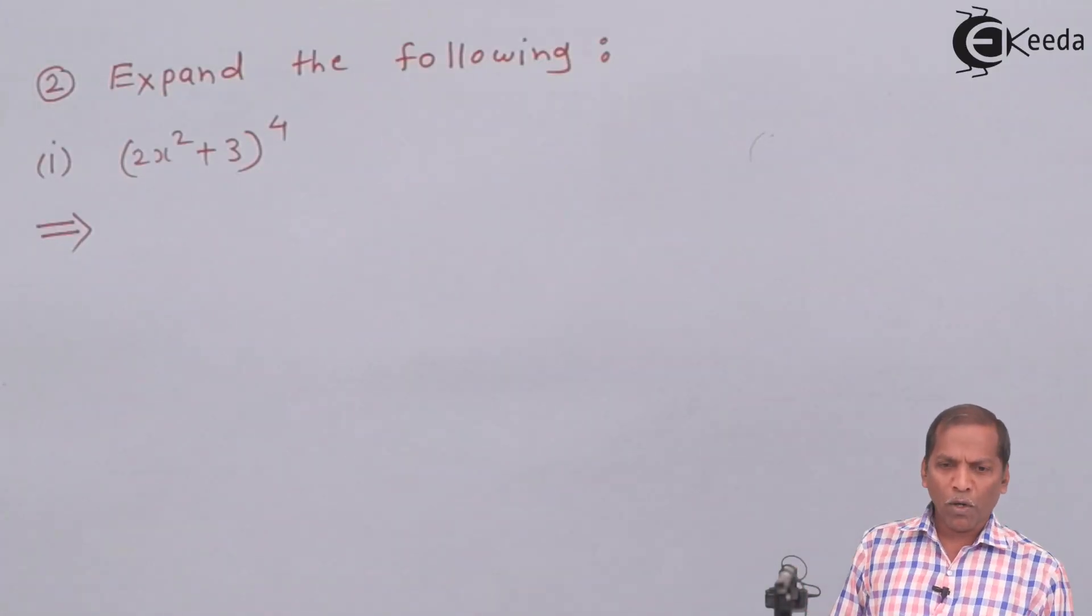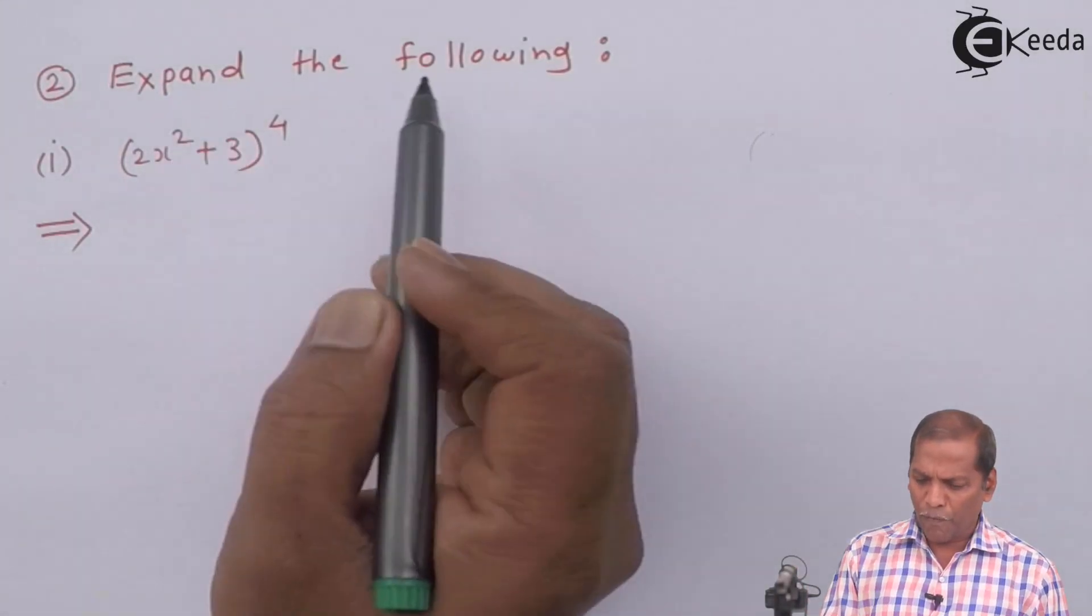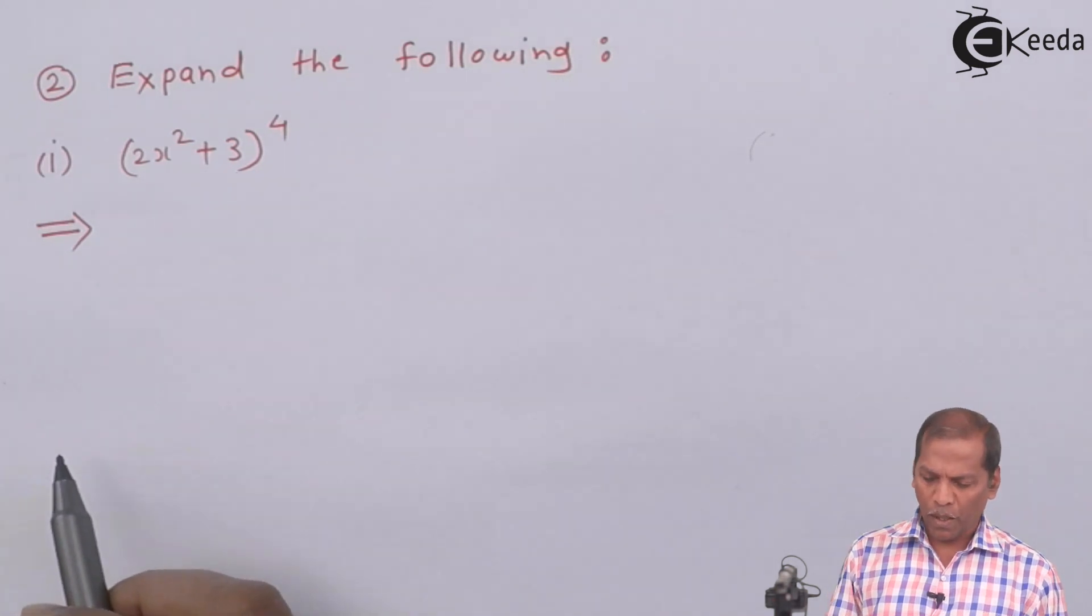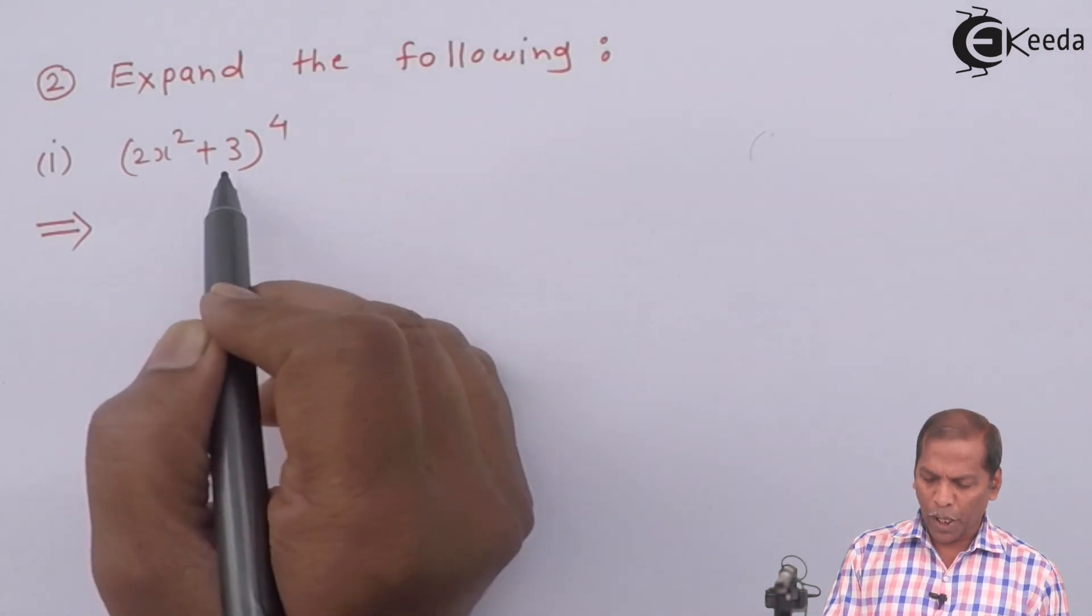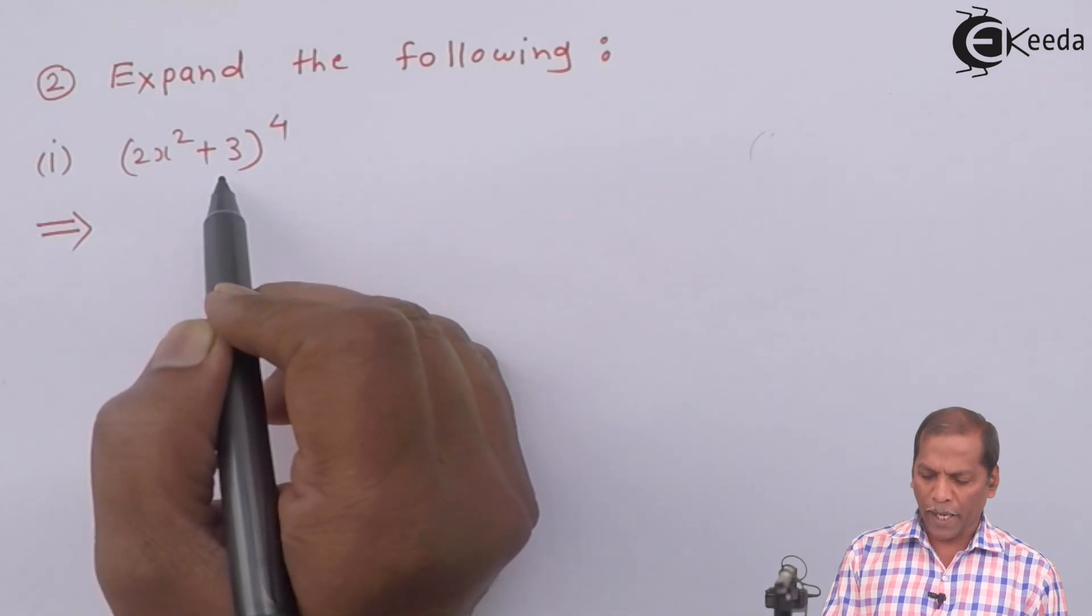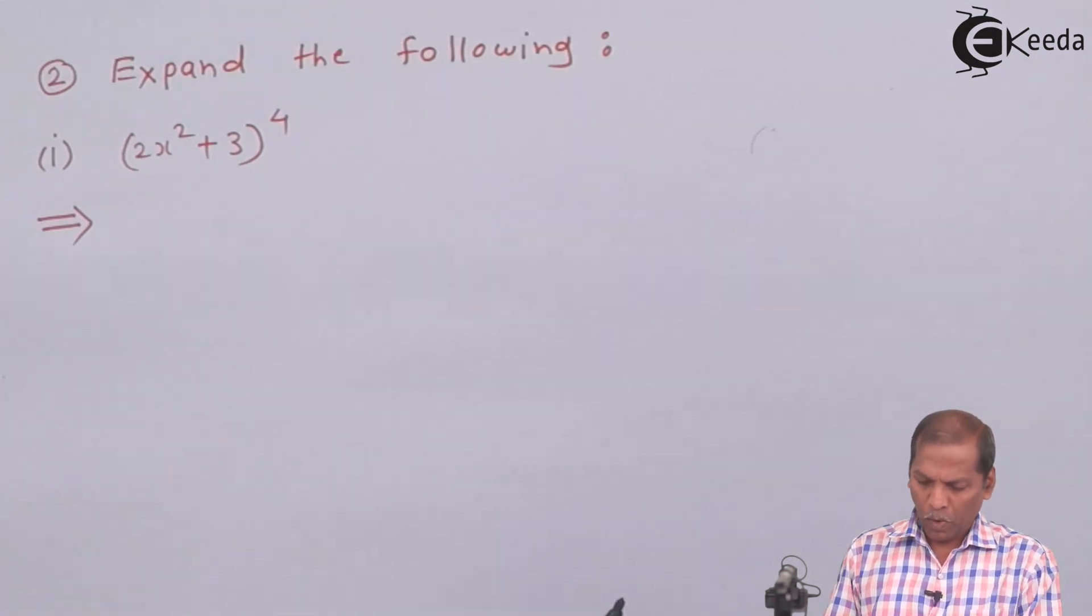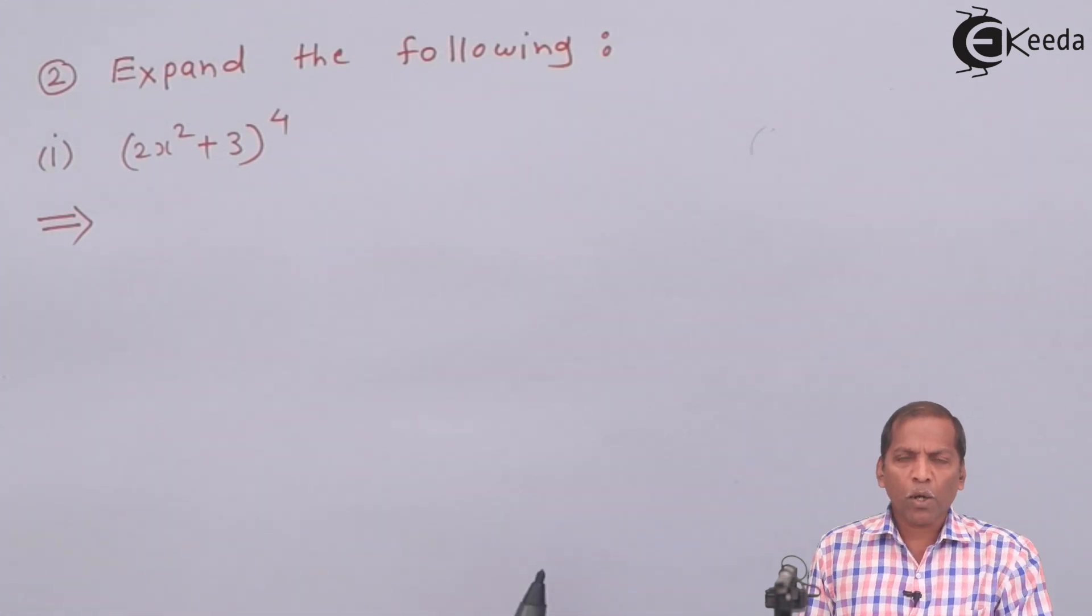Problem number 2 is expand the following: sub question 1 is (2x² + 3) whole bracket raised to 4. Now let's see the solution.